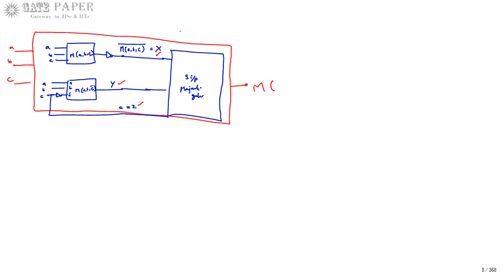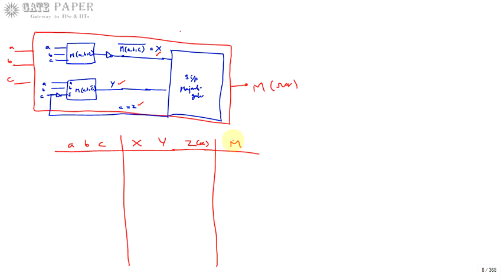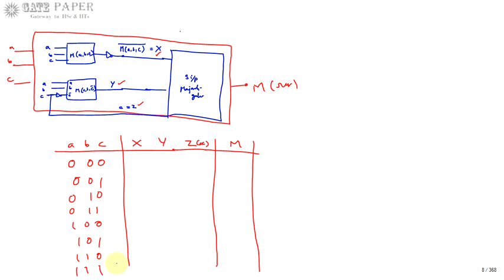For all possibilities of abc — 000, 001, 010, 011, 100, 101, 110, 111 — z is simply c. For x, which is the complement of m(a,b,c): wherever two or more inputs are one, majority gate outputs one, but since we complement it, output becomes zero. So x = 1,1,1,0,1,0,0,0.